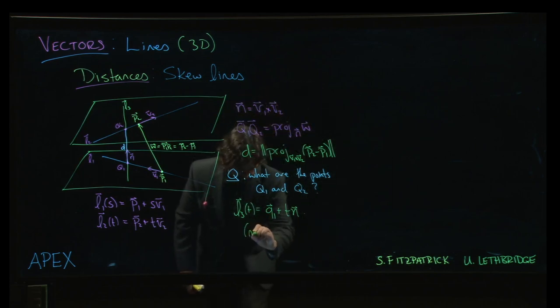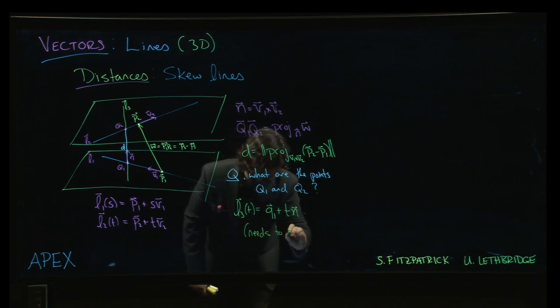And so what we do is to figure out what Q1 has to be. And we say, well, this needs to intersect line one and line two.